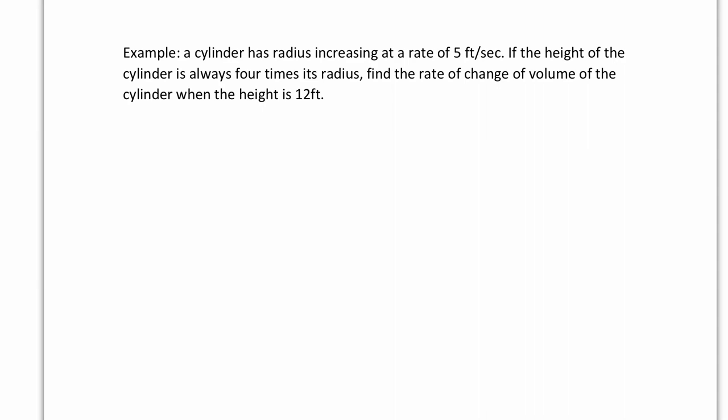So let's take a look at this first one. A cylinder has a radius increasing at a rate of 5 feet per second. If the height of the cylinder is always 4 times its radius, find the rate of change of volume when the height is 12 feet. Let's start by drawing a cylinder. Remember, we need to label this diagram — cylinders have two pieces of information: they have a radius and they have a height.